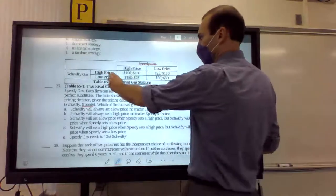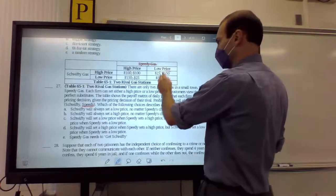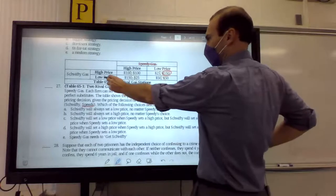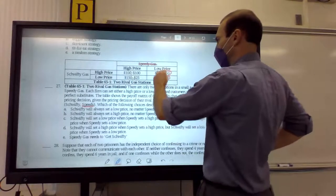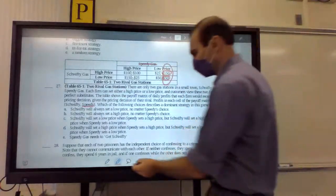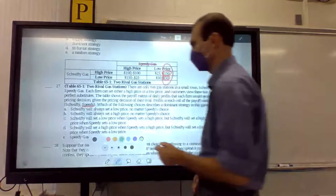All right. So, if Schwifty does a high price, what will Speedy, the second one, do? Make 100 or 150? The low price. They'll have the low price. Very good. What will they do if Schwifty has a low price? Make 25 or 50. So, what does Speedy have? Speedy has a low price dominant strategy. On the other hand, let's find the answer for Schwifty.